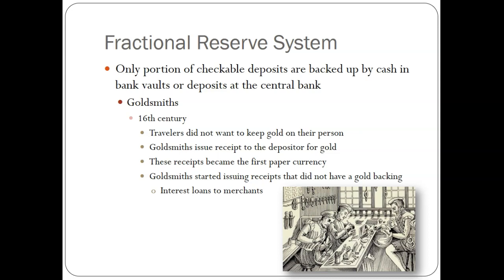How did this start? In the 16th century, travelers didn't want to carry a lot of gold — it wasn't safe. Robbers went after merchants, and the Silk Road was a very dangerous place. There was a goldsmith guild — a Catholic, modern-day union-type thing — and they all had signatures, placards, and cards to verify receipts. Those receipts said 'this traveler has X amount of gold in my vault,' and they would sign off saying they're good for it.